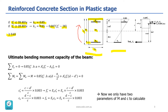Here you can see the strain diagram for this section. Epsilon s is the strain of the steel reinforcement in tension, and epsilon prime s is the strain of the steel reinforcement in compression. You also see the value of 0.003, which is the ultimate strain of the concrete because we are in the ultimate strength design stage. The stress diagram has a rectangular shape with a uniform stress of 0.85 f prime c for concrete and depth of a, which is equal to k1 times c.